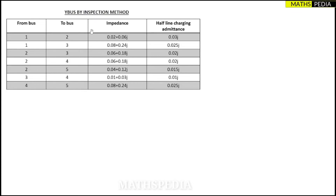In this video we are going to solve one more problem based on Y-bus matrix formation using the inspection method. A tabular form is given with from-bus and to-bus columns, meaning starting bus and ending bus. Between them a line exists, and the impedance of that line is given.